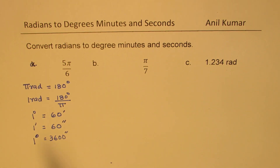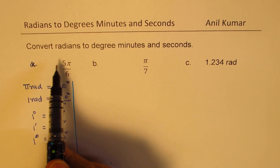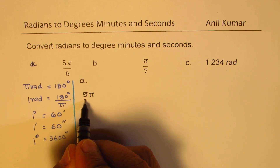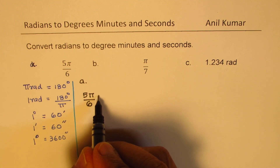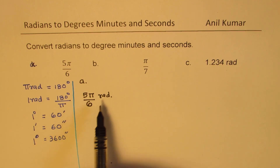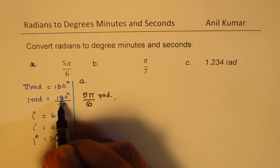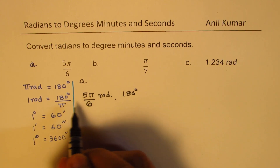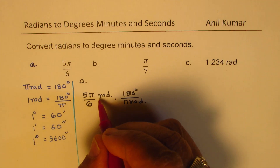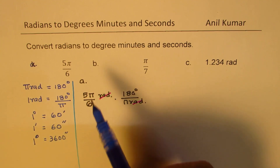Now let's begin with 5π/6. If nothing is written it really means radians — radians is a ratio. To convert that into degrees, we have to cancel radians and multiply by 180 degrees over π radians. You can see that the radian units cancel, and what remains is in degrees.